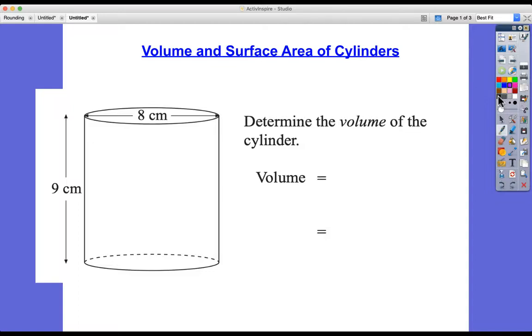Hello and welcome to a lesson on volume and surface area of cylinders. Now a cylinder is a prism with a circular cross section, as you can see here,